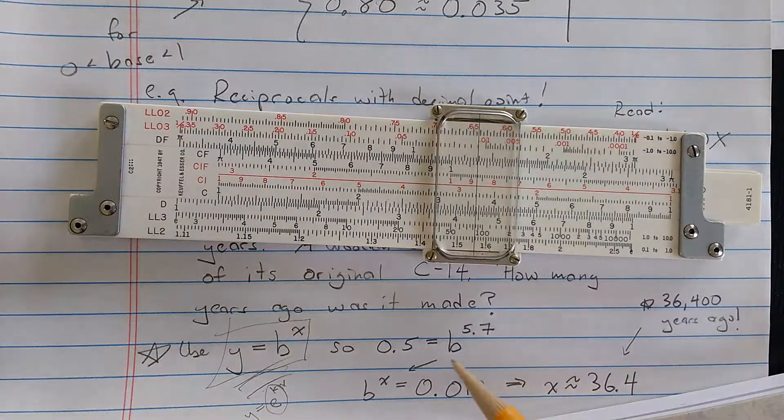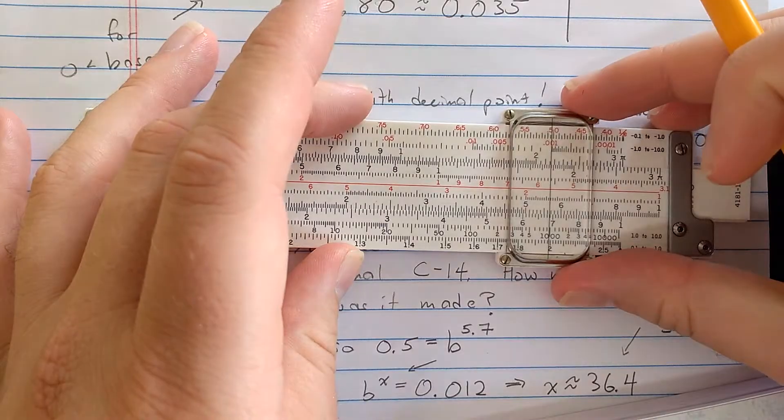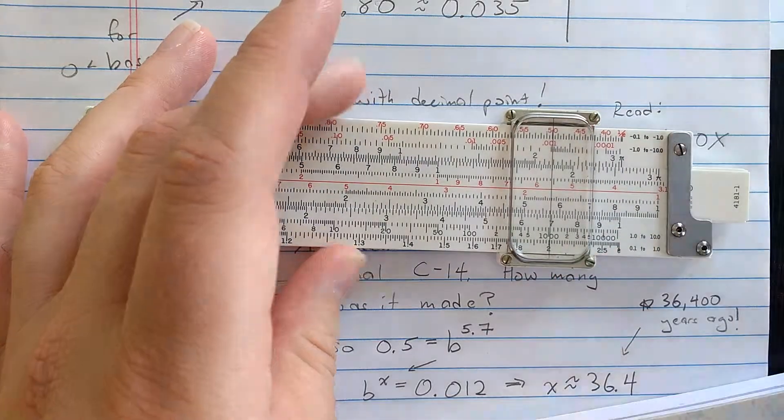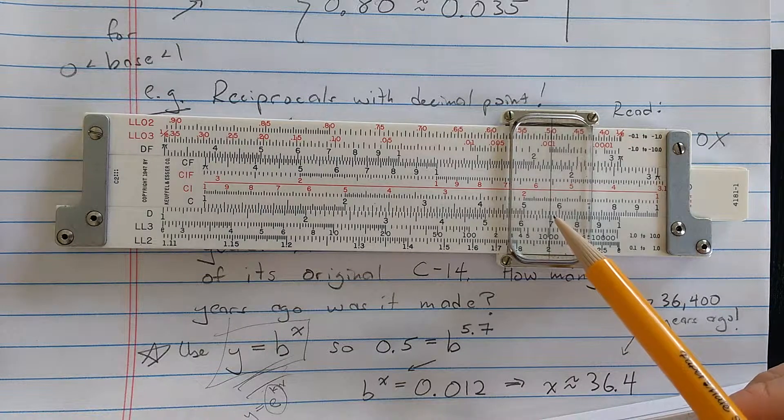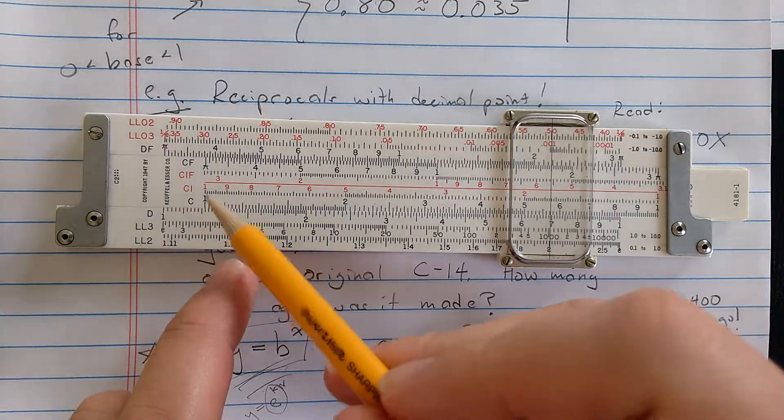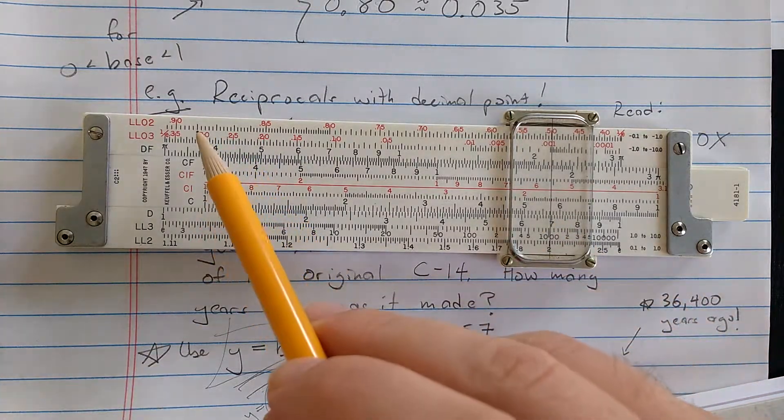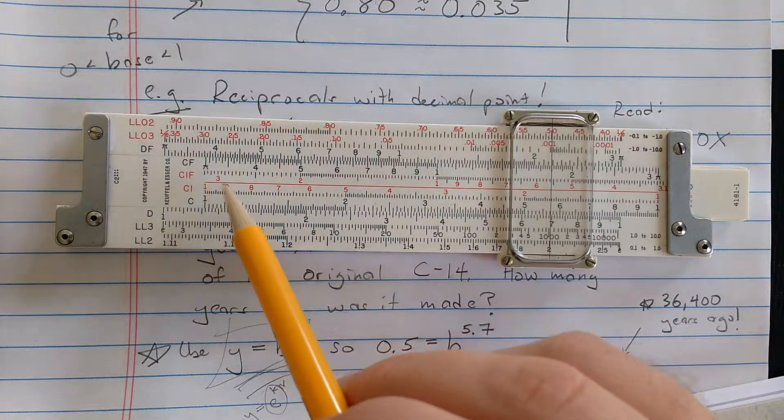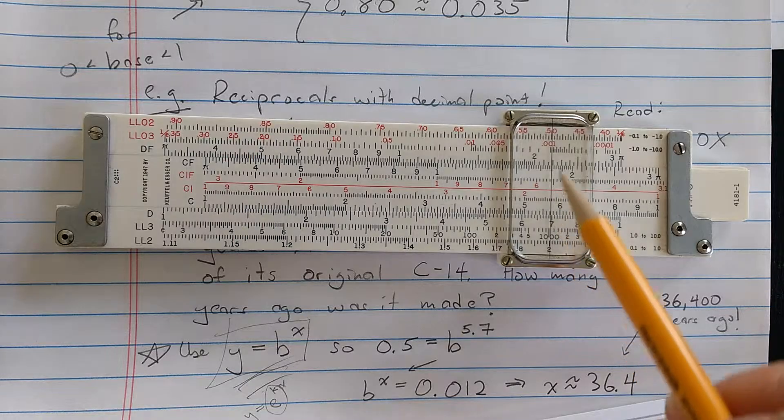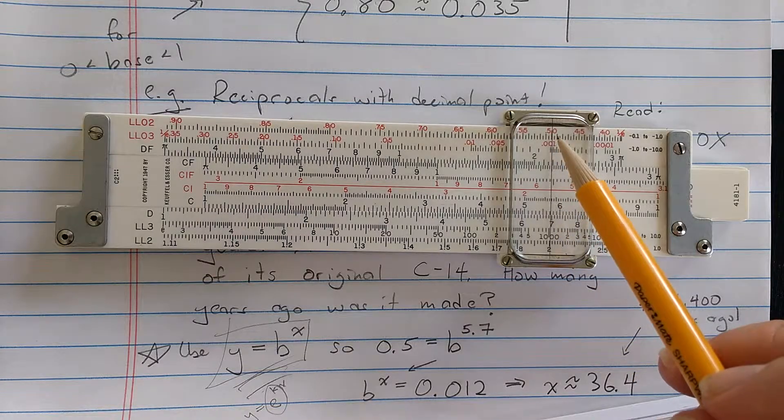So the first thing that I did was I figured the base. So I set 0.5 here as something to the 5.7. So I align the 5.7. That something is over here on the LL2 scale. It's like 0.88 something. 0.88 something to the 5.7 is equal to 0.5. Half-life.